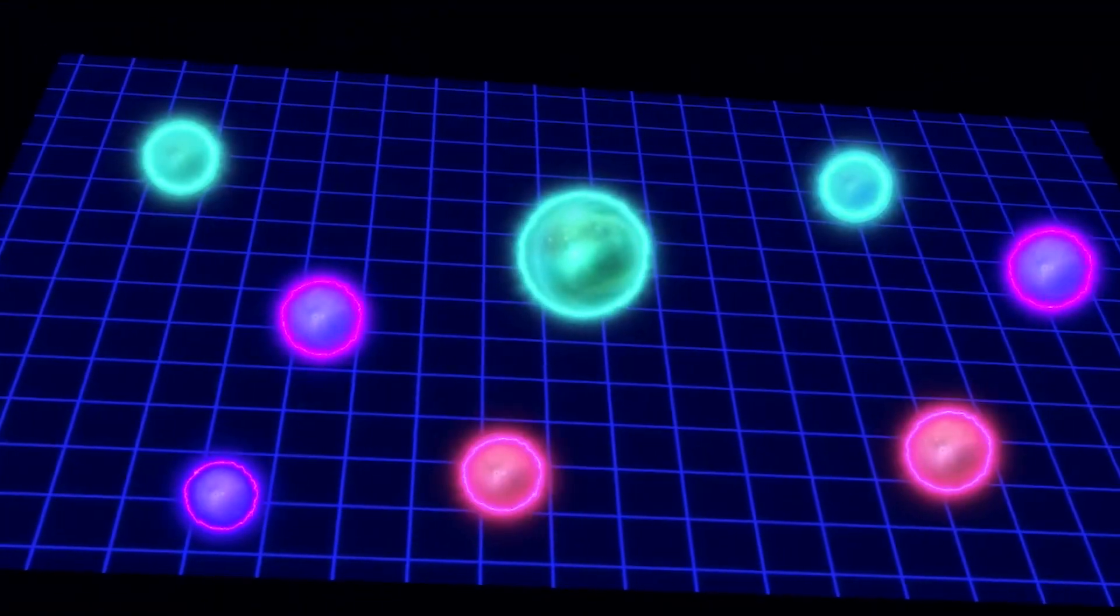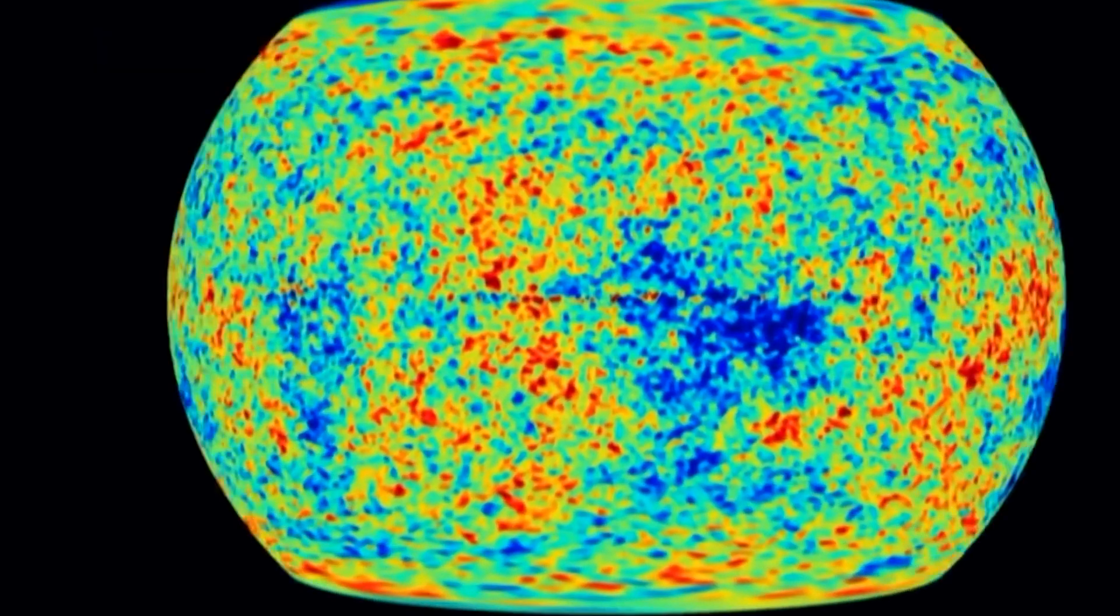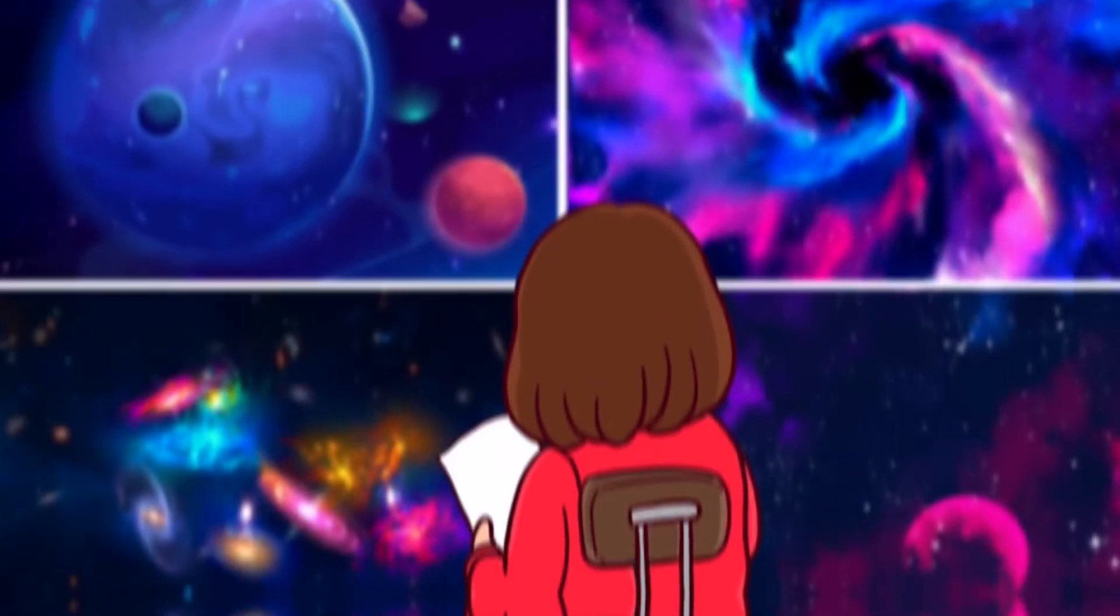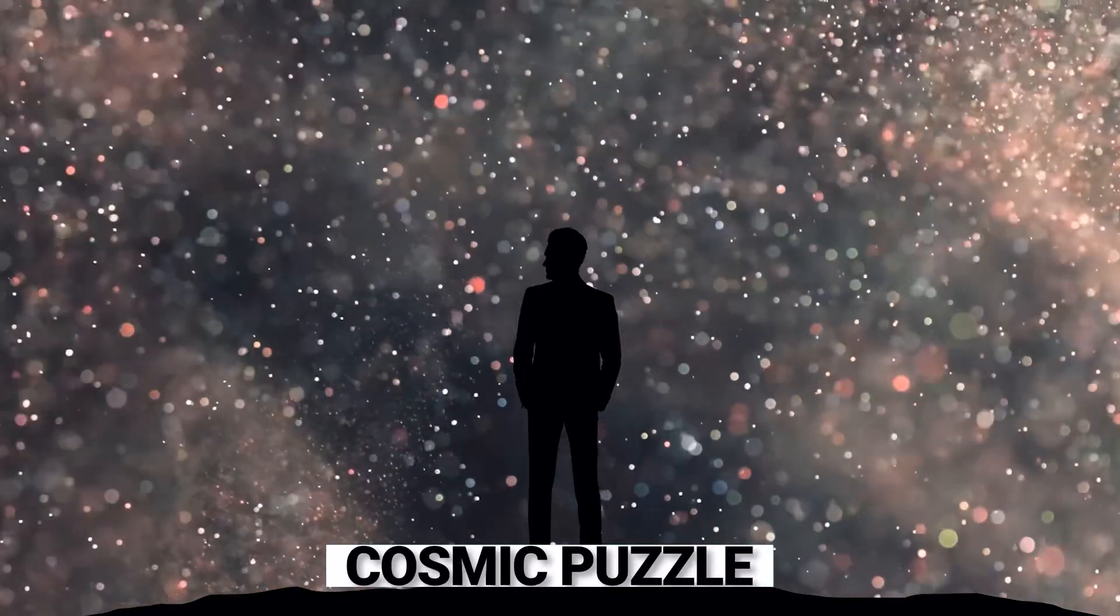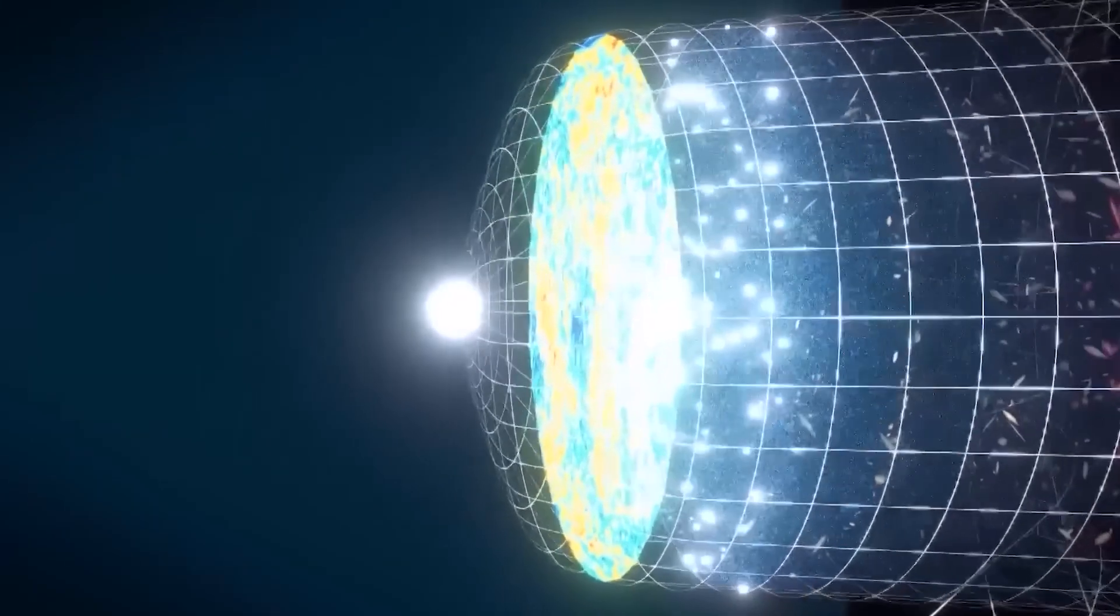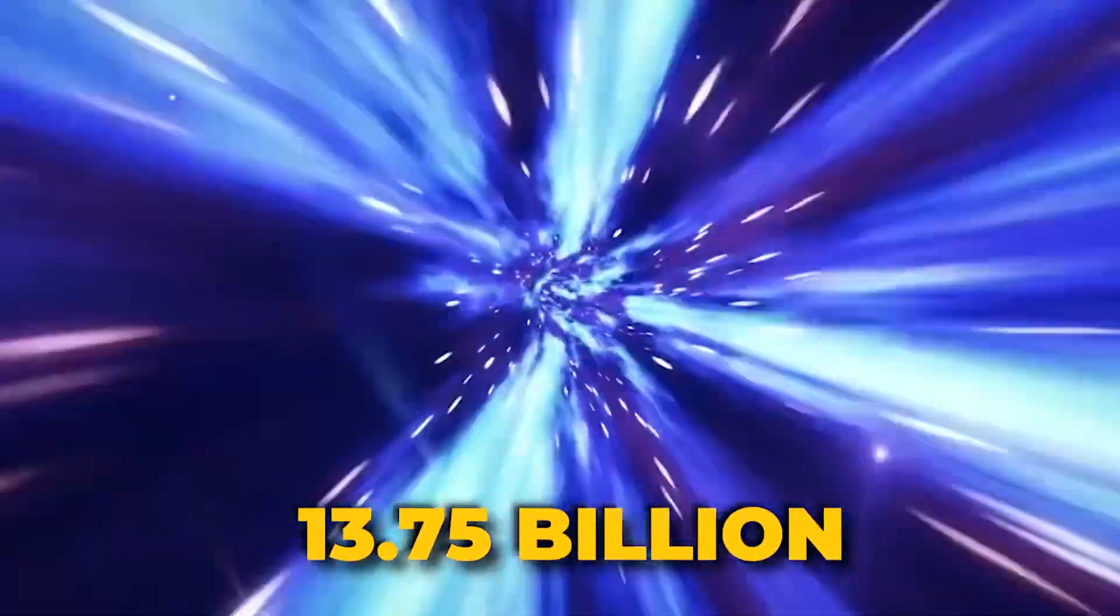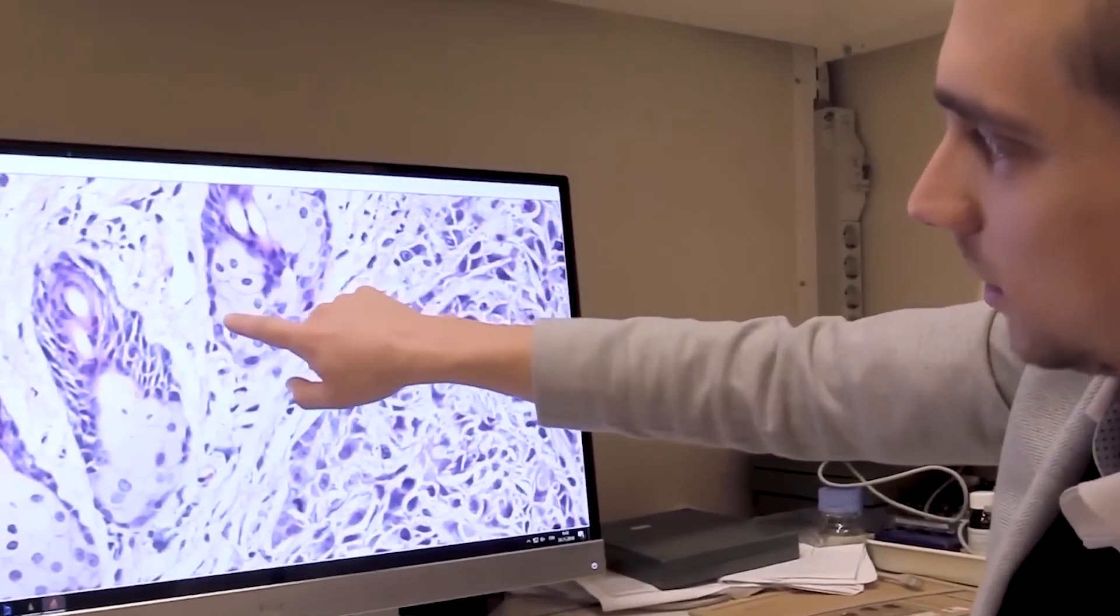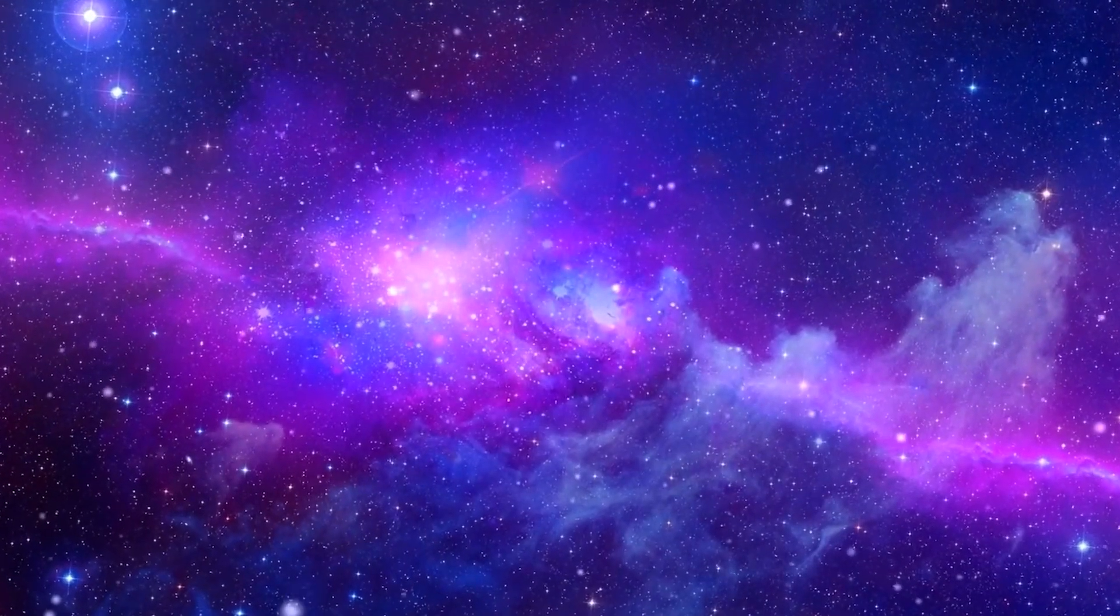This relentless growth continues to this day, propelling our cosmos into the unknown. The concept of the universe's boundaries and what might exist beyond them is a complex and mind-bending topic. To start, we must consider the observable universe, which is a crucial term in this cosmic puzzle. This universe's size is determined by the constraints of how far light can travel in the time our universe has existed since the Big Bang, approximately 13.75 billion years. Cosmologists estimate that the oldest photons we can observe have traveled around 45 to 47 billion light years.